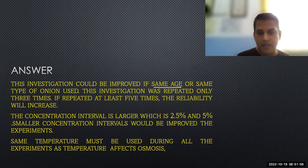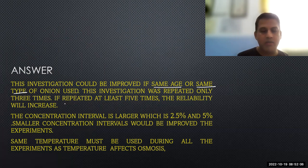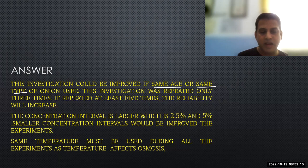What will the answer for this question be? This investigation could be improved if same age or same type of onion is used. This investigation was repeated only three times; if repeated at least five times, the reliability will increase. The concentration intervals are larger—2.5% and 5%—smaller concentration intervals will improve the experiment. Same temperature must be used during all the experiments as temperature affects osmosis.